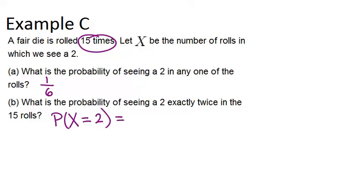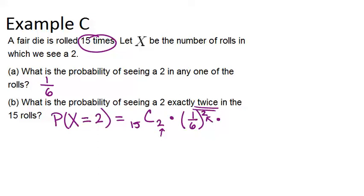There are 15 rolls, and out of those 15 rolls we want to choose 2 of them where the 2s will appear, since we want to see a 2 exactly twice. So 15C2 is the number of ways to get two 2s out of the 15 rolls. We multiply by the probability of getting a 2 twice: (1/6) squared. For all 13 rolls where we're not getting a 2, the probability is 5/6, raised to the 13th power. Note that 13 and 2 add back up to the total number of trials, which is 15.